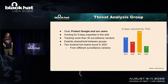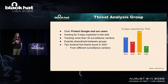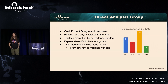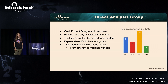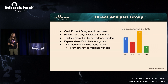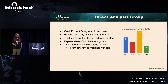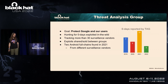Google's Threat Analysis Group, or TAG for short — our goal is to protect Google and our users. One way we do this is by routinely hunting for zero days exploited in the wild. Back in 2019 we reported seven zero days found in the wild, five in 2020, ten in 2021 — so it was a pretty good year for us. So far in 2022 we reported three zero days found in the wild.